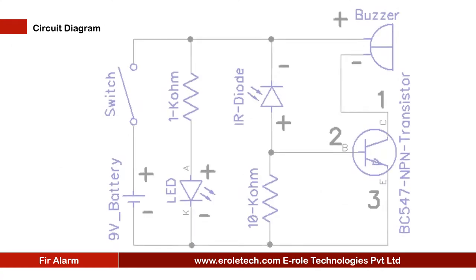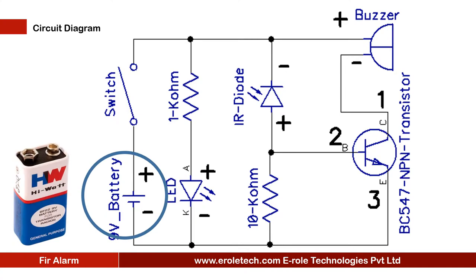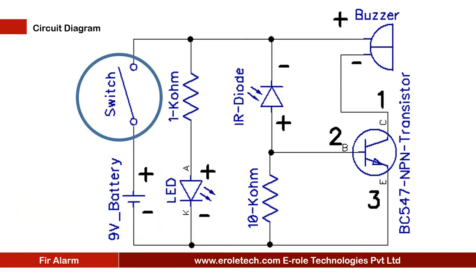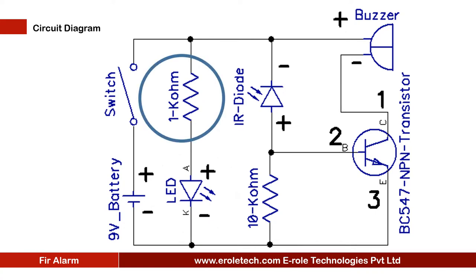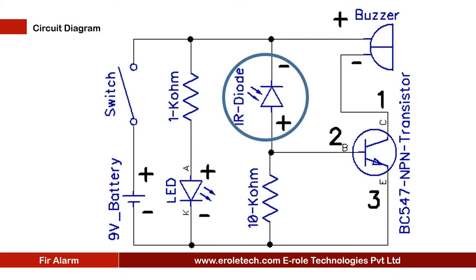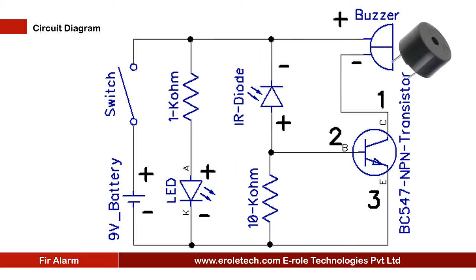Before making the project we will understand its circuit diagram. This is a 9 volt battery to power up the circuit. This is an on-off switch to start or stop the project. This is a power supply indication LED. This is a current limiting resistor to protect the LED from high current and voltage. This is the symbol of a photodiode. This is a 10 kilo ohm resistor used to give ground signal to the transistor. This is the symbol of a buzzer — it will beep when fire is detected.